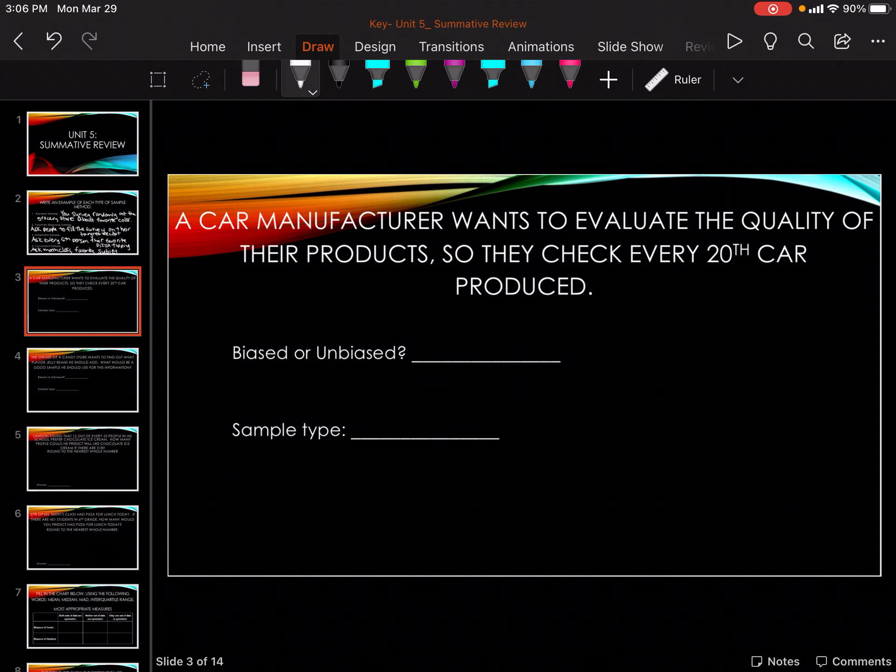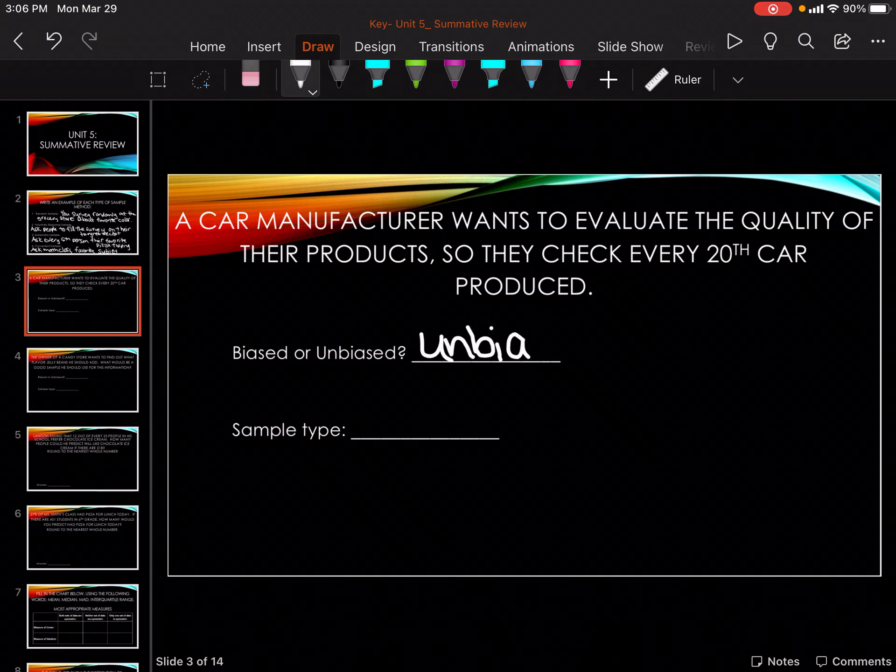Okay, car manufacturer wants to evaluate the quality of their products so they check every 20th car. That is going to be unbiased and that is going to be systematic because every 20th car.